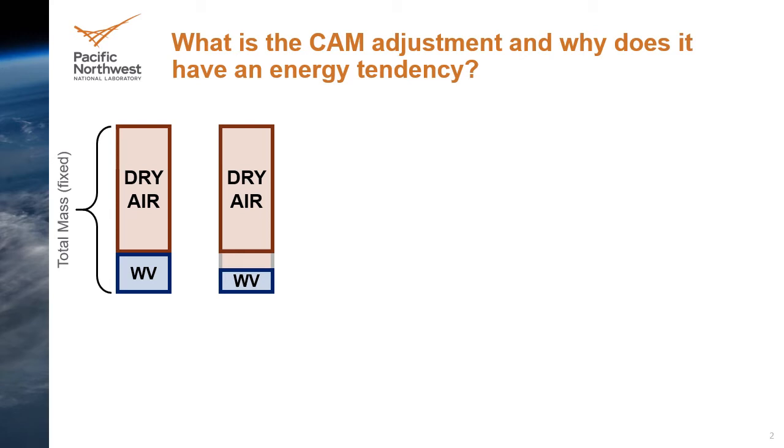In CAM, this correction is taken care of by an adjustment procedure that runs after all the physics parameterizations have completed.